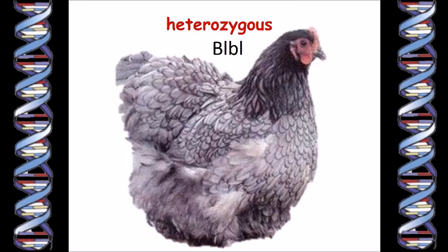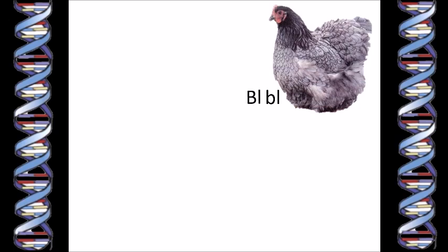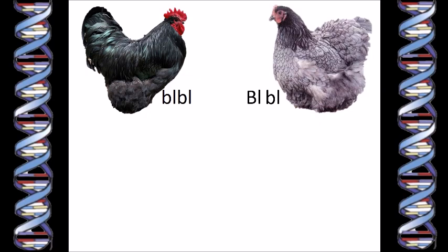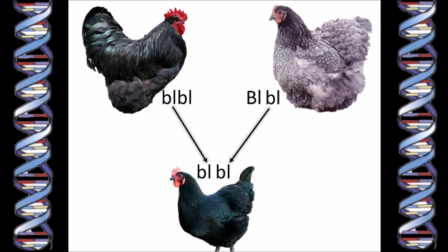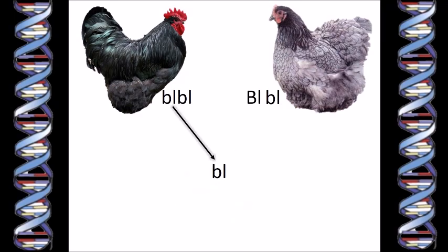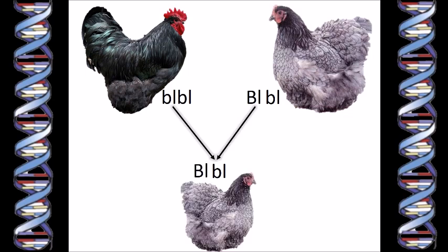Our heterozygous blue chick has two different genes — what does she pass on to the next generation? The answer is a matter of chance. Our blue chicken can pass on her big BL gene or her little bl gene, but will only pass one or the other onto her offspring, who will inherit their second copy from their father. If a blue chicken mates with a black rooster, who is homozygous for little bl, he can only pass a little bl gene on. So if our blue chicken also passes on her little bl gene, the offspring will have two little bl genes and be black. If she passes on her big BL gene, the offspring will have one big BL and one little bl, and so will be blue.